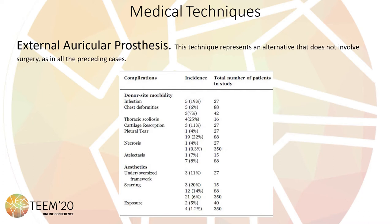In the figure, we can see the percentage of occurrence of the different types of complications that can occur with traditional methods, such as infection, ear deformities, necrosis, scarring, etc. All of this can be avoided if the option of external auricular prosthesis is chosen.